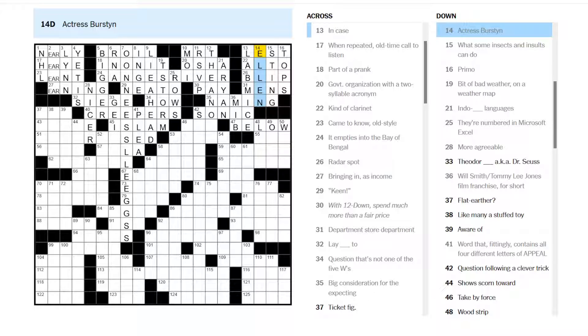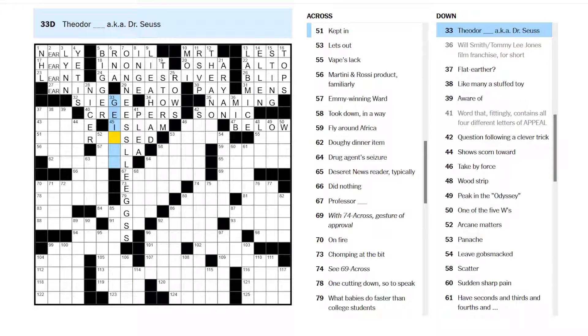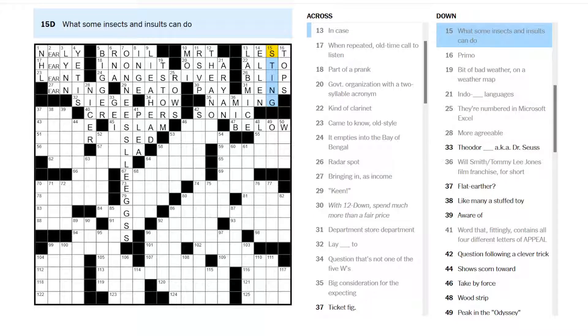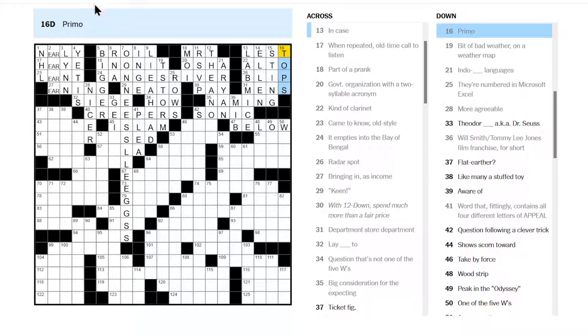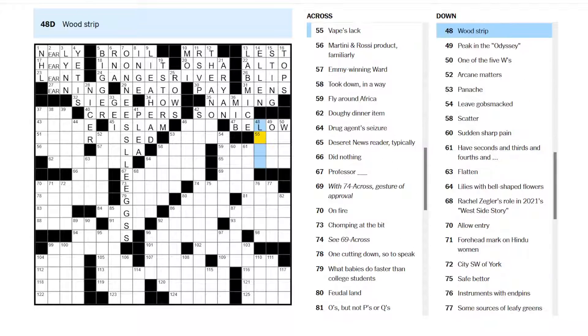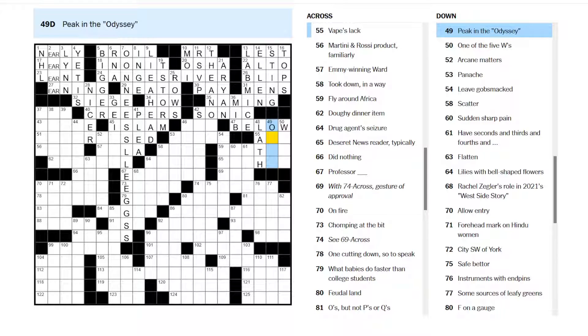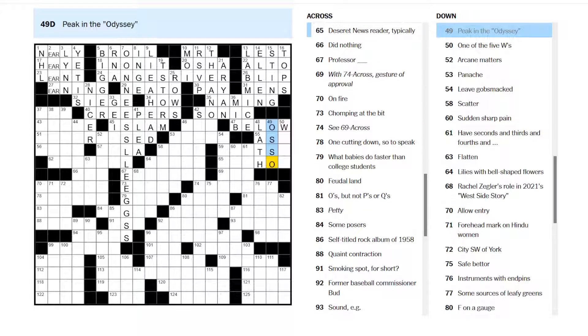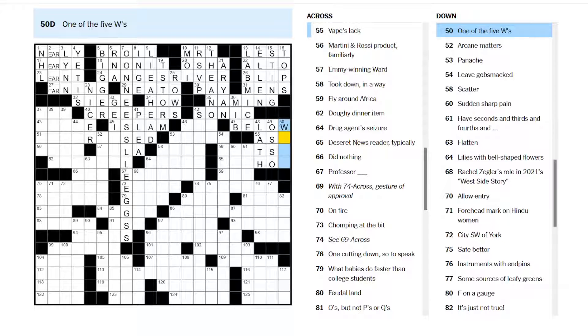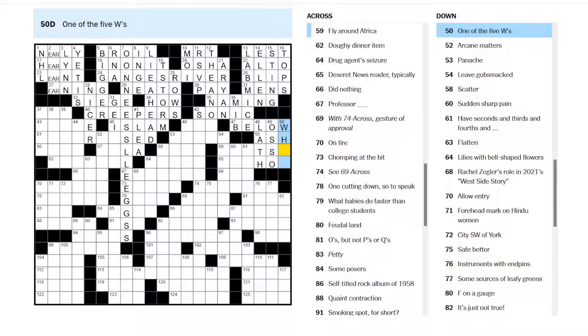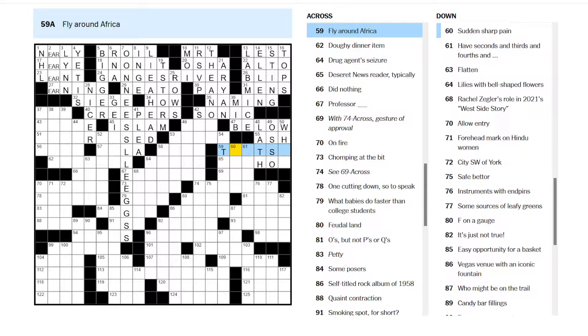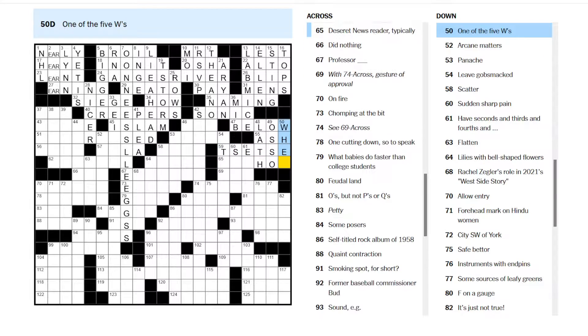Actress Burstyn. Ellen Burstyn. Yes, I believe so. What some insects and insults can do is sting. And primo is tops. Yep, those all look good. A wood strip is a lath. Peak in the Odyssey. Oh, oh so, I think. One of the five W's. Who, what, when, where, why. Vapes like as ash. It's either what or when. Fly around Africa. Is the tsetse fly. When.